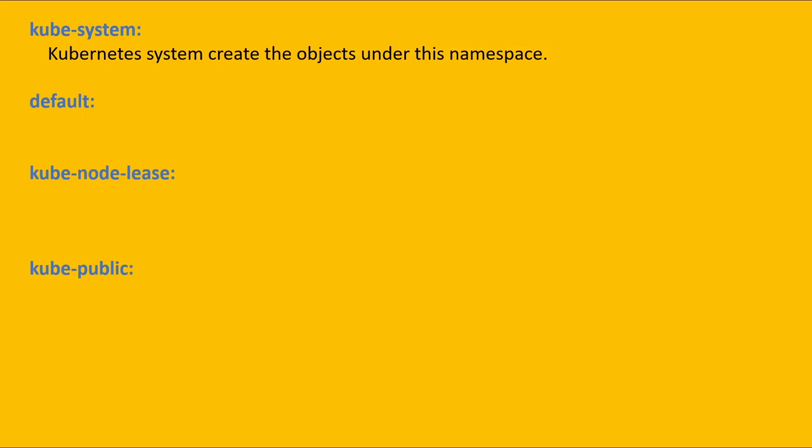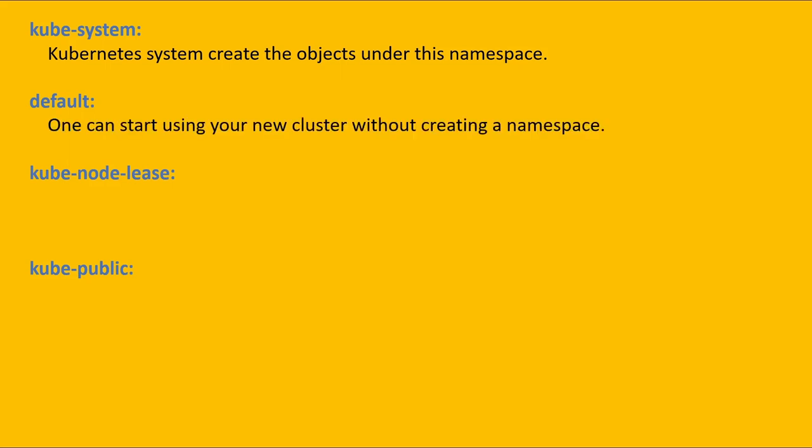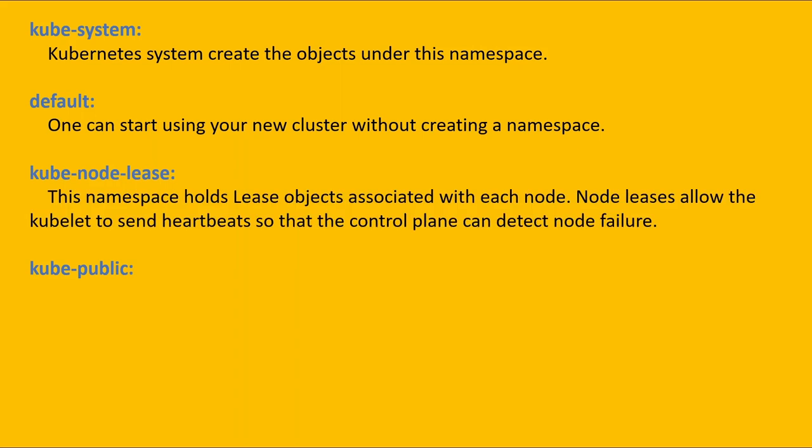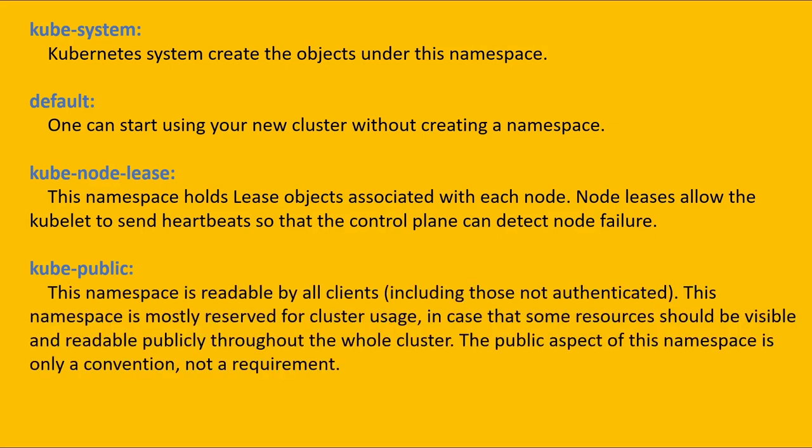The kube-system namespace is where Kubernetes creates system objects such as all the master node components. In 'default', when we create objects like a pod or deployment without specifying a namespace, those objects are created under the default namespace. In 'kube-node-lease', this namespace holds lease objects associated with each node, allowing the kubelet to send heartbeats so the control plane can detect node failure. The 'kube-public' namespace is readable by all clients, including unauthenticated ones, and is mostly reserved for cluster-wide public resources — though this is convention, not a requirement.